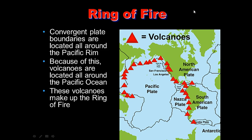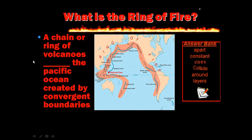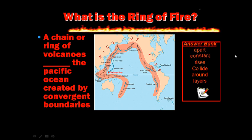Ring of Fire: convergent plate boundaries are located all around the Pacific Rim, resulting in a chain of volcanoes around the Pacific Ocean called the Ring of Fire. Question on the left, answer on the right — use the answer bank to complete the sentence.